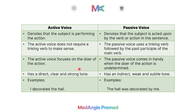In active voice the focus is on the doer of the action, but in passive voice the focus is on the receiver — the object is more emphasized. For example, 'The hall was decorated' — the hall is what is focused on. In active voice we have a direct, straightforward, clear tone, but in passive voice we are speaking indirectly.